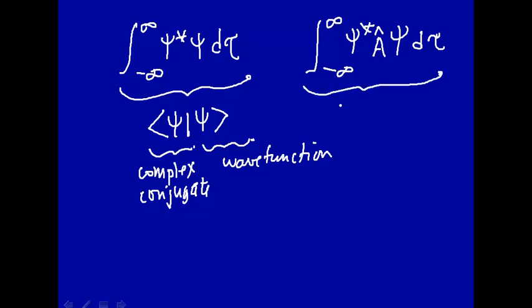Well, in the Dirac notation we could just write this more simply as psi, bar, and then a operator times psi. And that sometimes can also be written, or that can also be written as psi, a, psi.